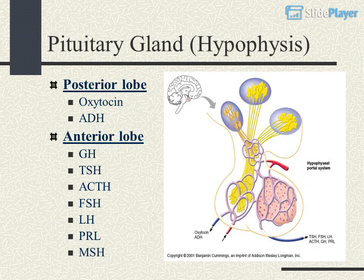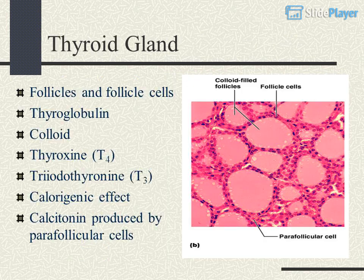Pituitary gland (hypophysis): posterior lobe produces oxytocin and ADH; anterior lobe produces GH, TSH, ACTH, FSH, LH, PRL, and MSH. Thyroid gland contains follicles and follicle cells with thyroglobulin colloid, producing thyroxine (T4) and triiodothyronine (T3), which have a calorigenic effect. Calcitonin is also produced by parafollicular cells.